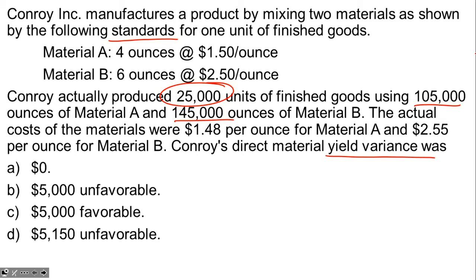The question is: Conroy's direct material yield variance was how much? There's a lot of information here, and to answer this question we don't need all of it. If we look at what the question is asking and understand it, we're able to sort through all the information and get only what we need.